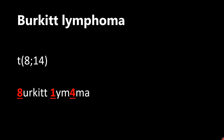Let's start with Burkitt lymphoma — it's a translocation between chromosomes 8 and 14. The way I remember these translocations is by incorporating the numbers into the name. For Burkitt lymphoma, I make the 8 the 'B' of Burkitt, then the 1 is the 'L', and the 4 is kind of the '-FOMA'. So chromosome 8 and 14 is the translocation for Burkitt lymphoma.